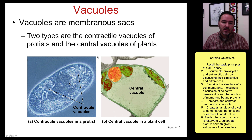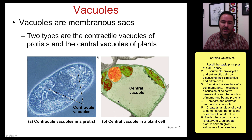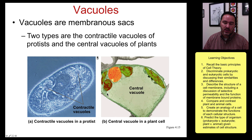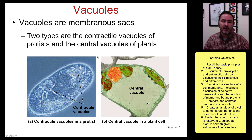Vacuoles are found in protists in the form of contractile vacuoles, and central vacuoles which are found only in plants. The central vacuole is used as a storage sack where plants can store lots of water and other things, and it can contract and expand.